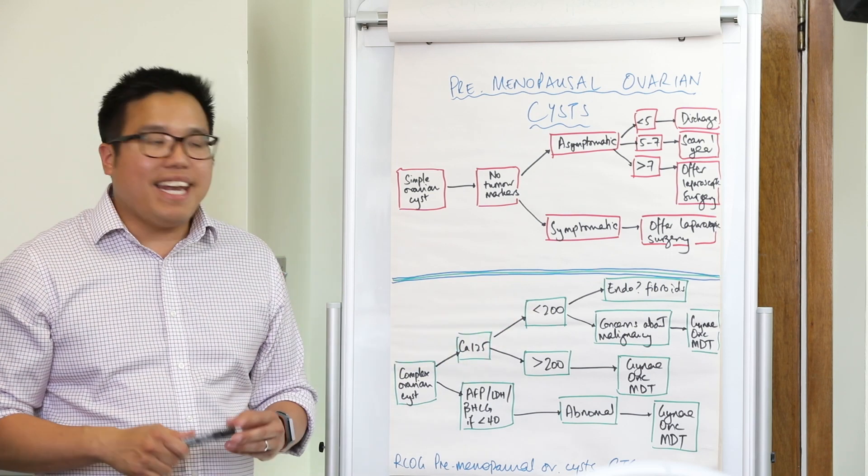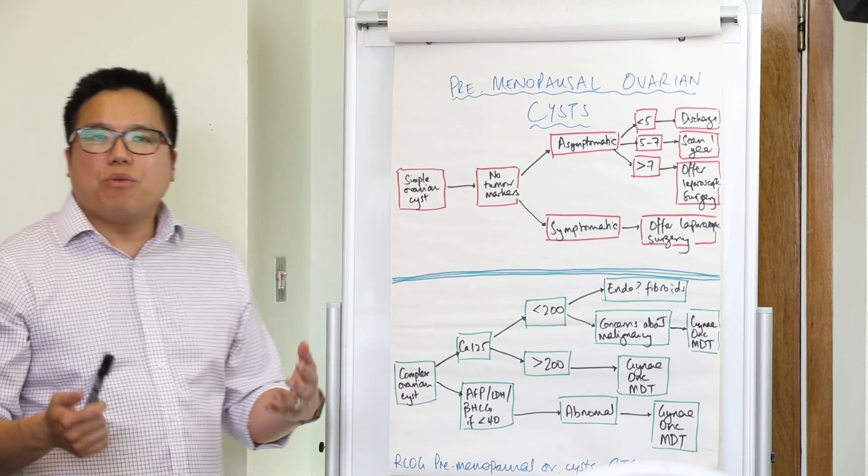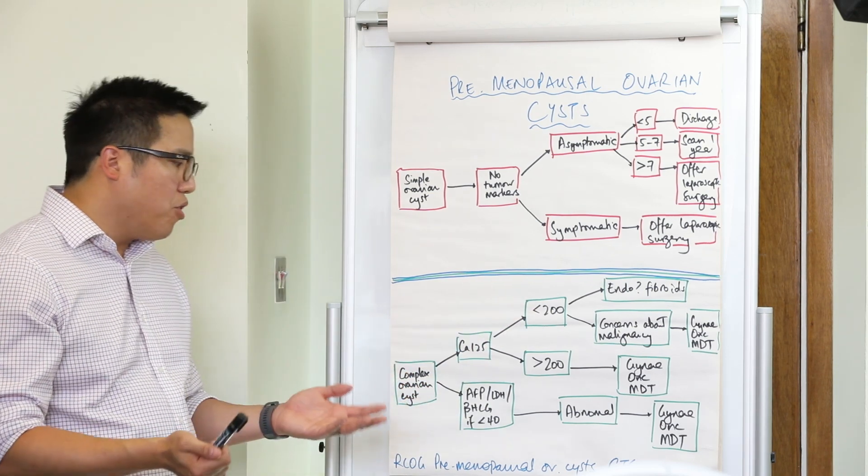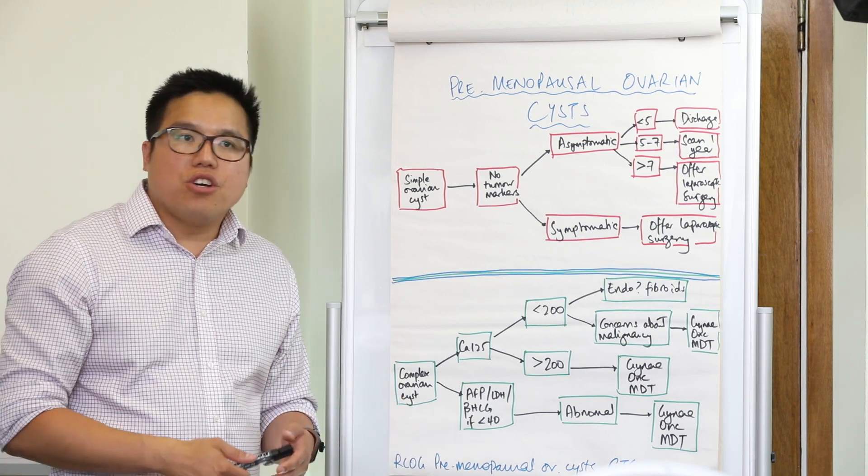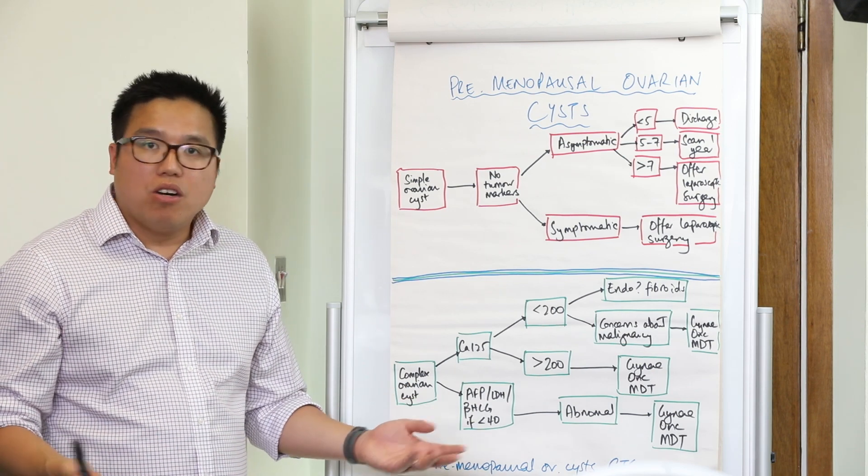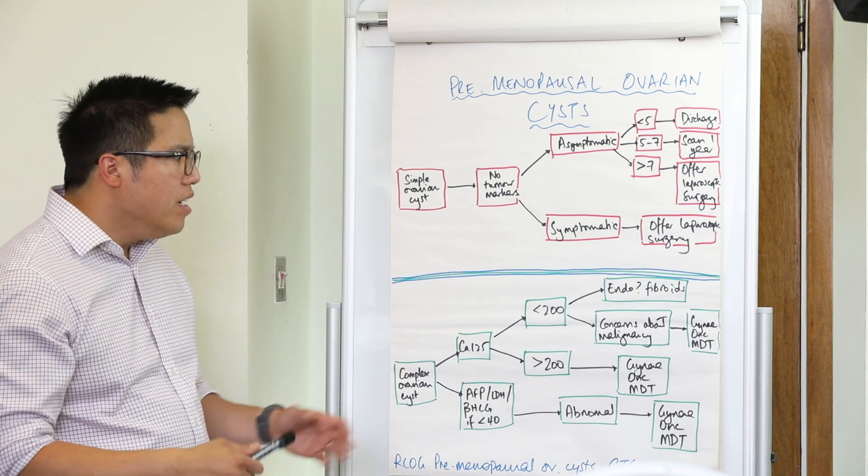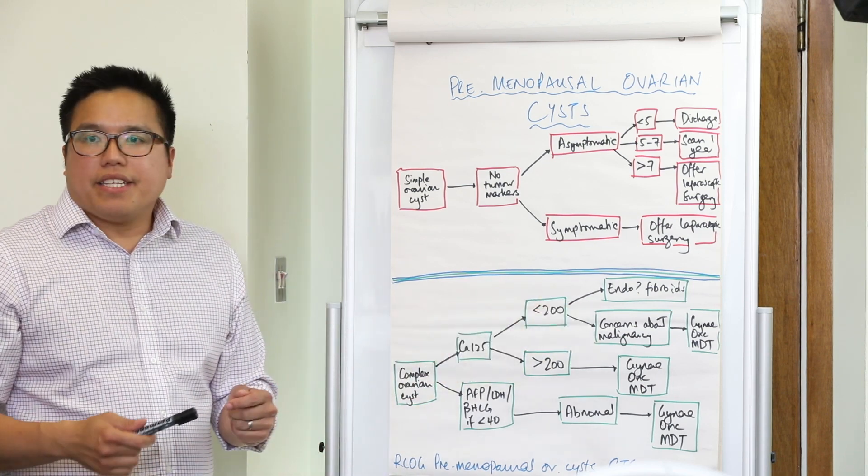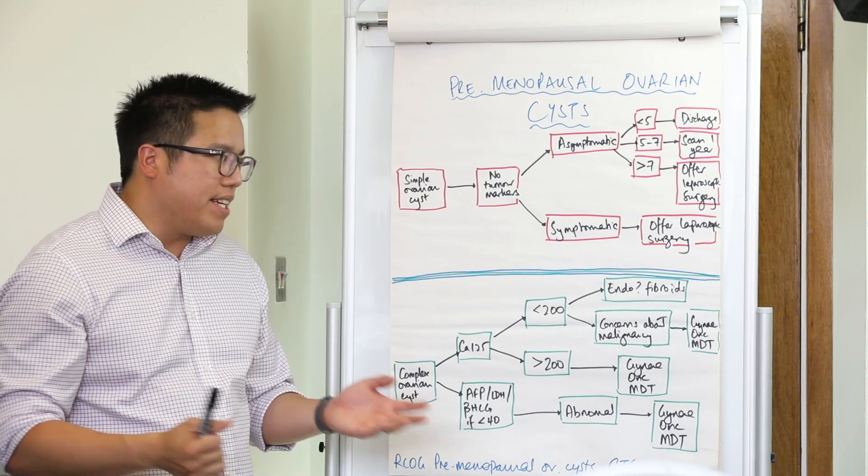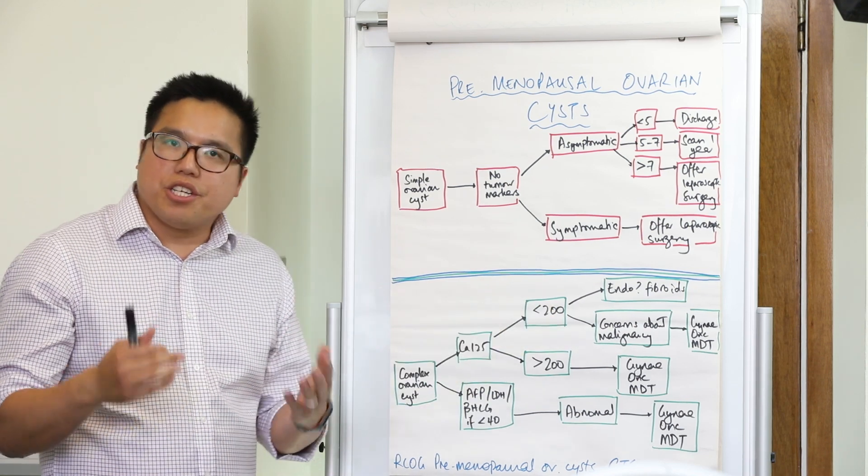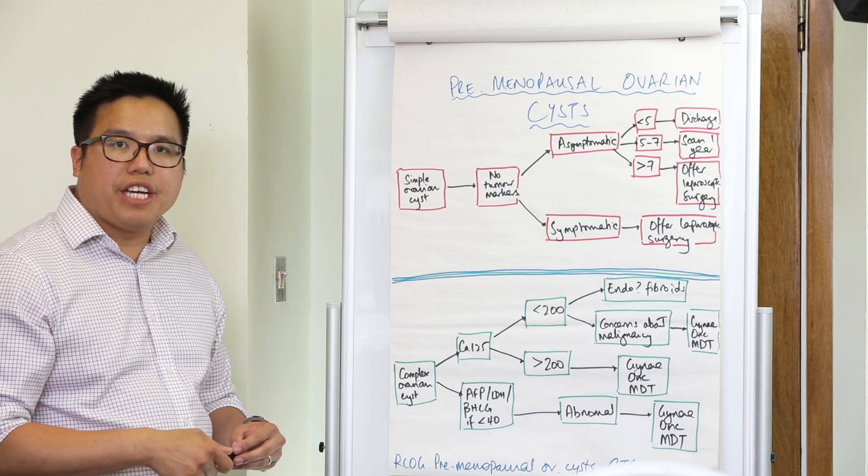If the CA125 is less than 200, well then we need to think why has this one got a complex ovarian cyst? Could it be an endometrioma or could it be just a fibroid on the uterus? If we don't find those things and there's still concerns about malignancy, then again very easy, we just refer straight to the gynae oncology MDT.